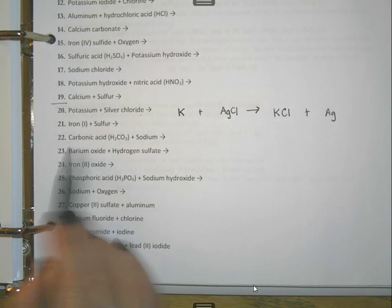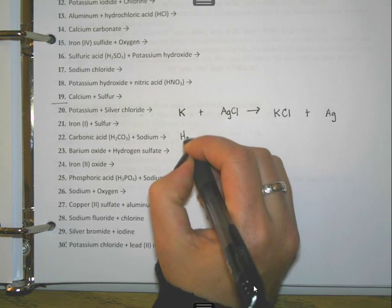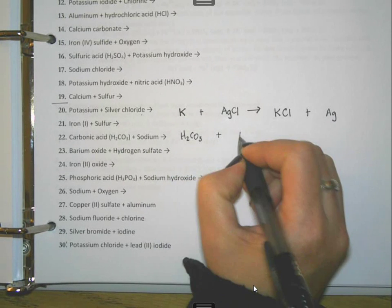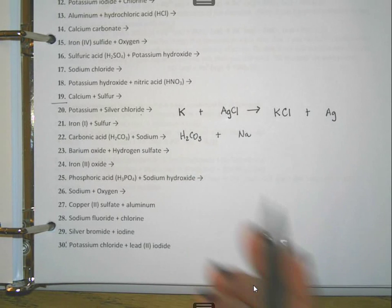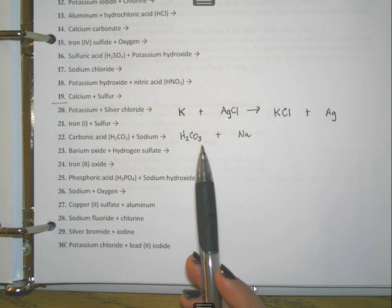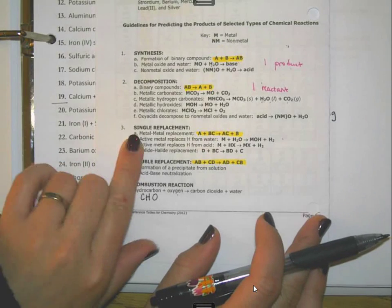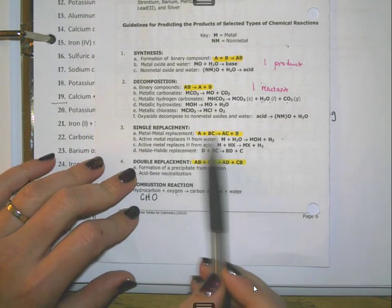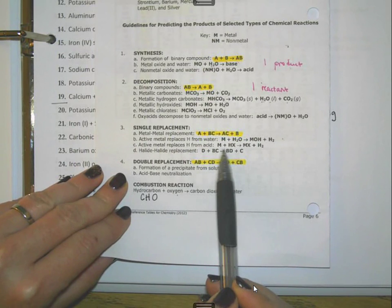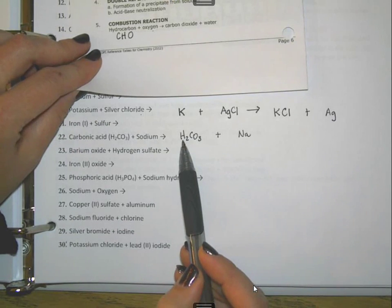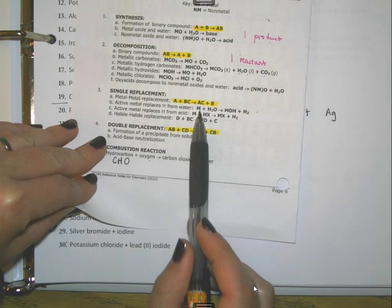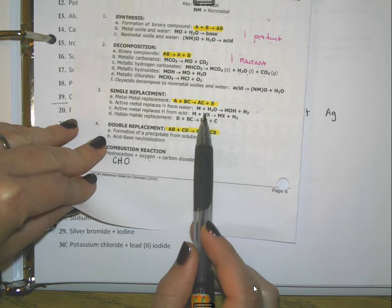Skipping to problem 22: we have carbonic acid, H₂CO₃ — this can also be called hydrogen carbonate — plus sodium. Sodium is just an element, so we write Na. Same idea: I see a single element and a compound. Going back to the reference table for single replacement, I don't have metal plus water, but I do have a metal plus something with hydrogen. It doesn't matter that sodium is written on the right; the two things can switch places and it means the same thing.